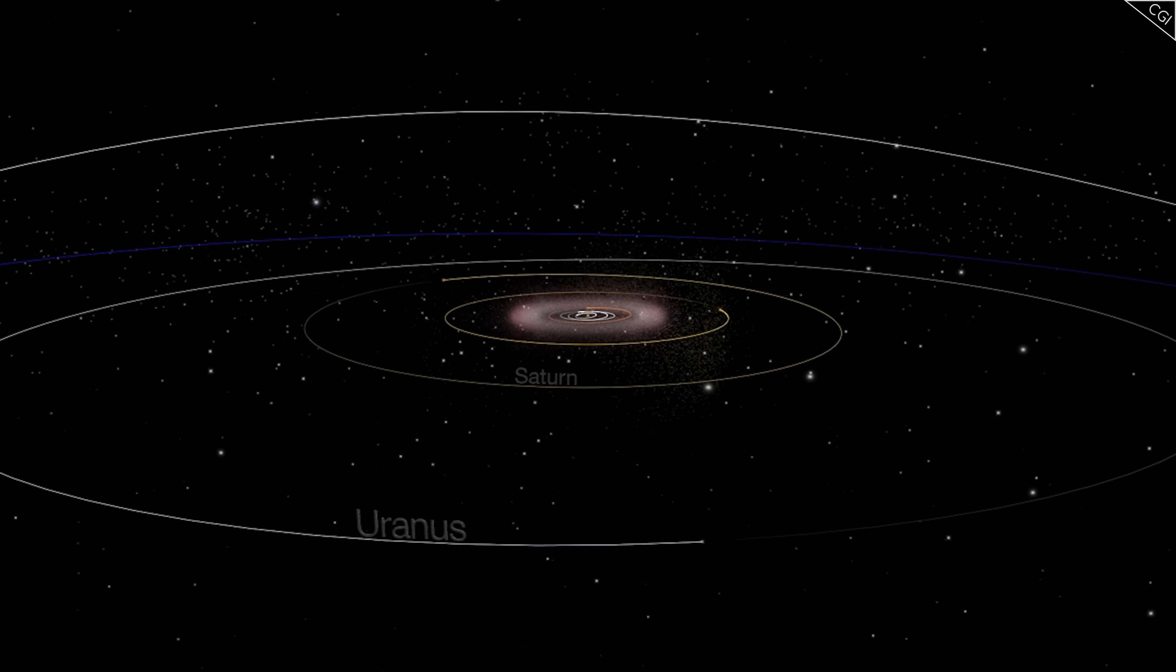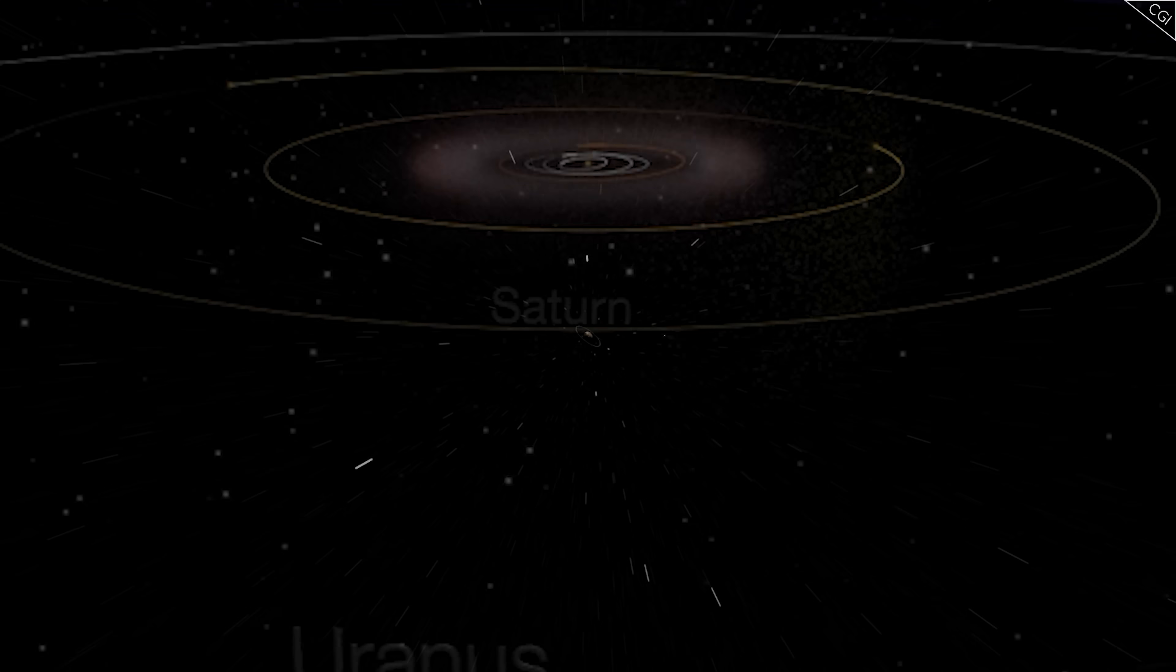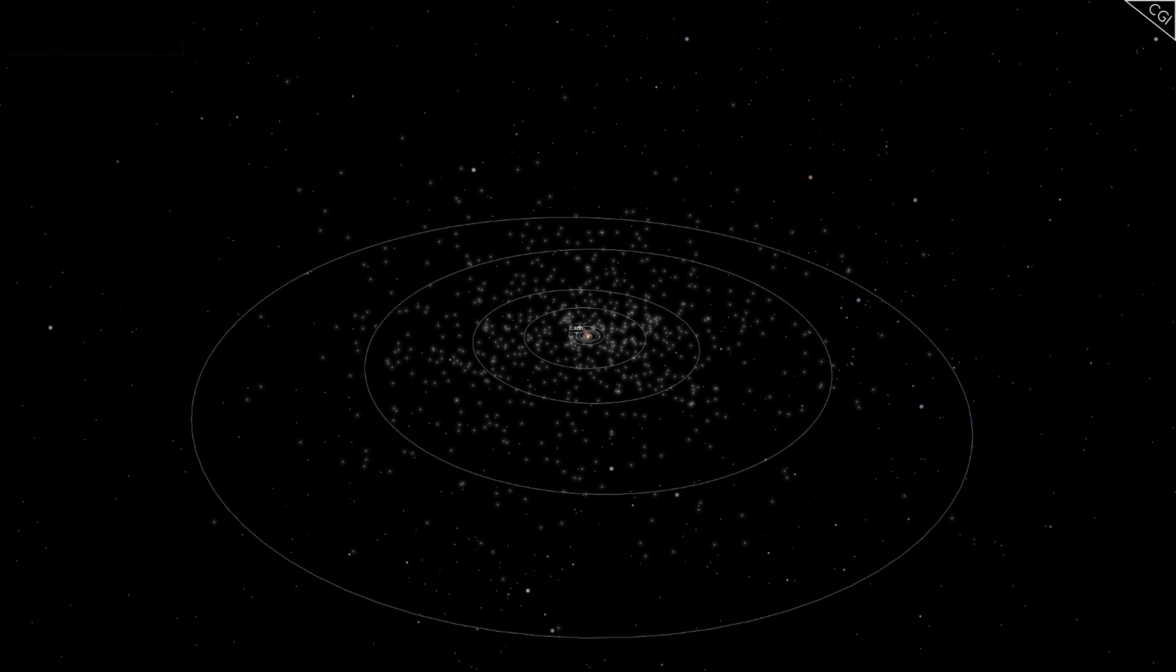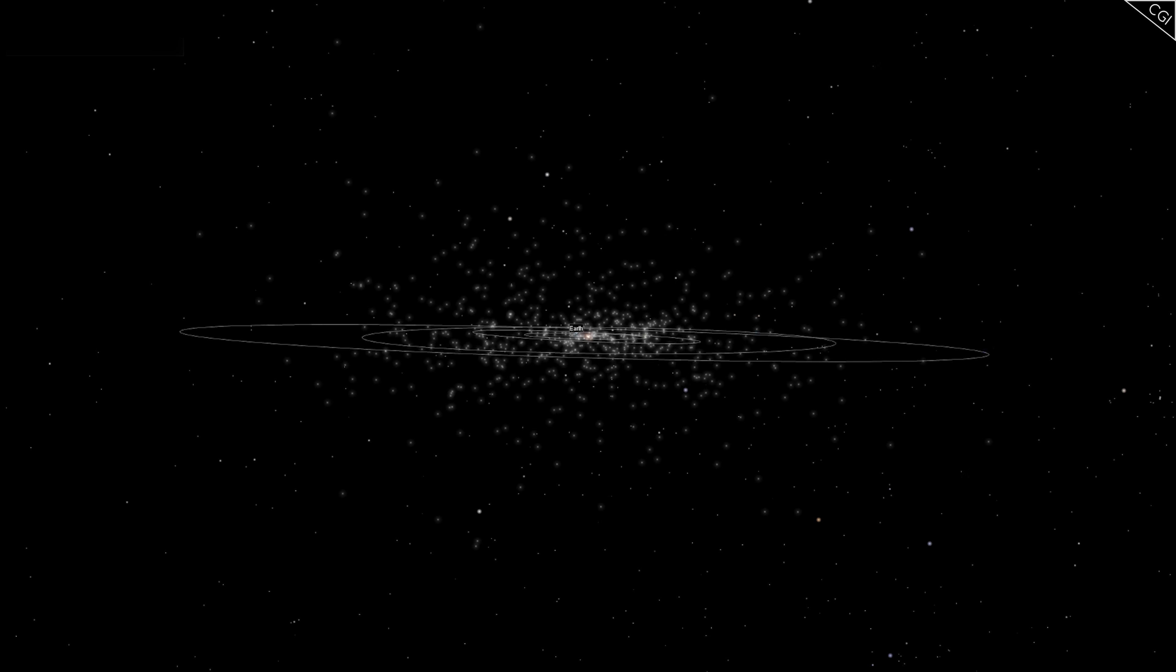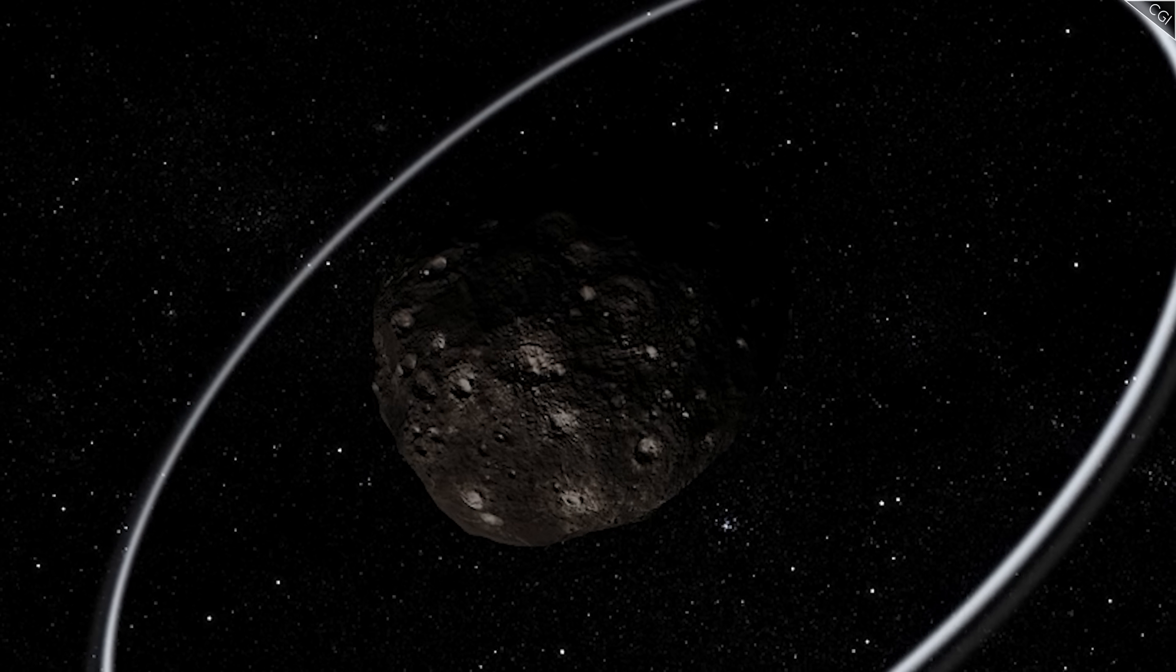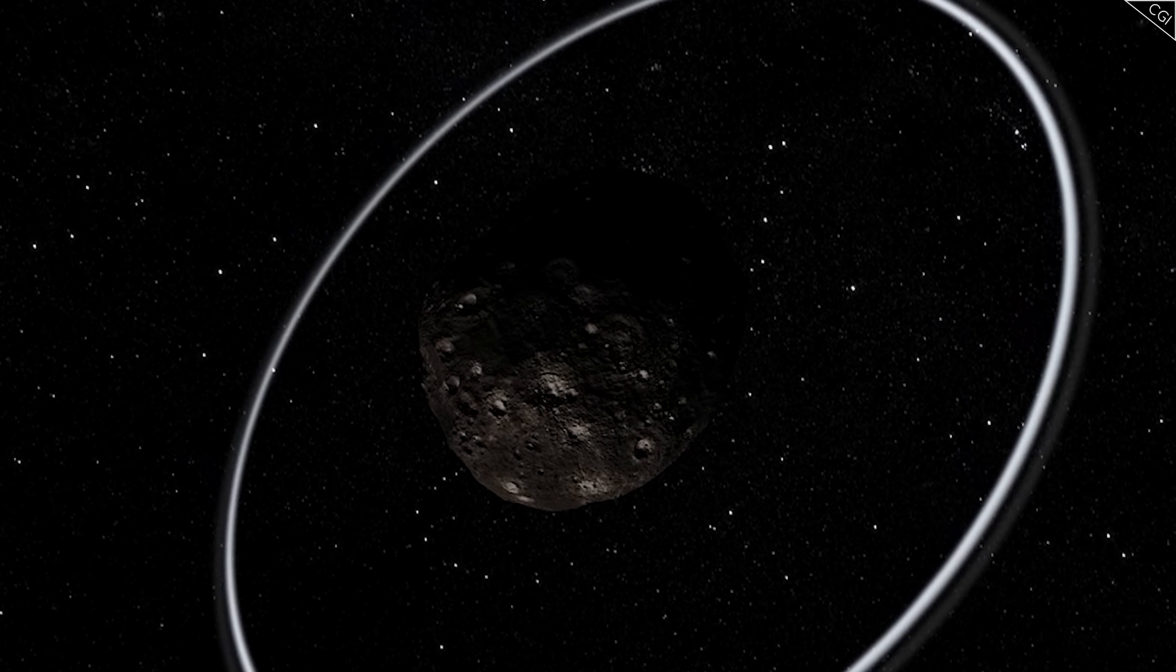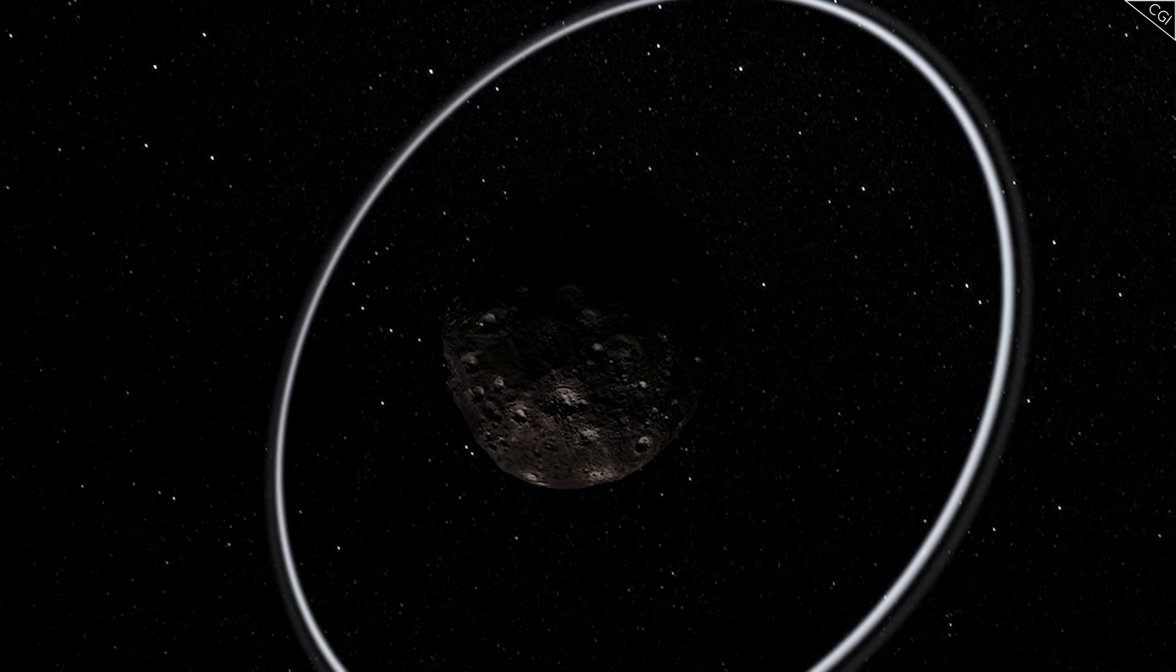In our solar system, between Saturn and Uranus, there lies a rather unusual asteroid called Chariklo. It is 250km in diameter, and is the largest of the asteroids known as the Centaurs, asteroids that tend to orbit between Jupiter and Neptune. However, that is not its claim to fame. Chariklo is impressive, because in 2013, it was discovered to be one of 5 objects in our solar system to have rings.